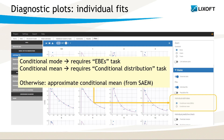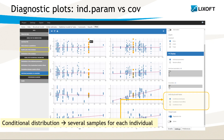By default, Monolix uses the conditional mode for computing predictions, taking the philosophy that the most likely values of the individual parameters are the most suited for computing the most likely predictions. It is also the default choice for observation versus prediction and scatter plot of residuals. Plots from the individual model section and distribution of the residuals plot use by default the set of samples from the conditional distribution, which allows to better represent the distribution of individual parameters and reduce the bias due to, for example, sparse data.